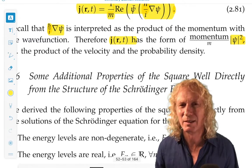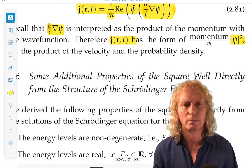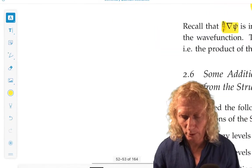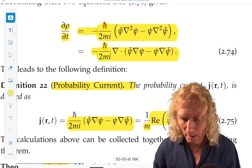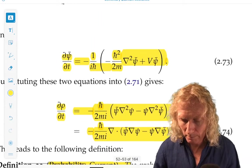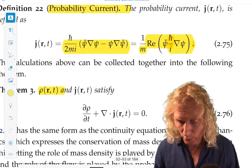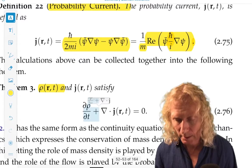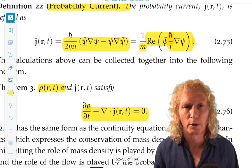And conservation of probability is a fundamental, fundamental characteristic of quantum mechanics. And keep in mind that we got that by using the Schrödinger equation to derive this continuity equation. And then from the continuity equation, you get conservation of probability.